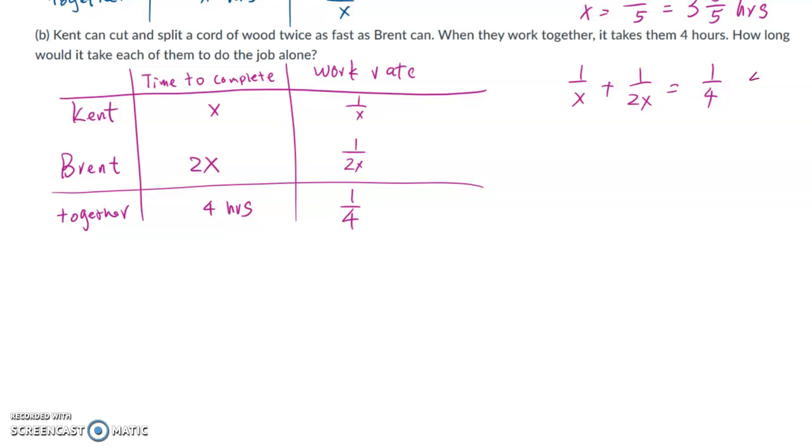So now we need to solve this equation. First, let's find the least common denominator, which is 4X. Now I need to turn each denominator into 4X, so multiply this X by 4, same to the top, multiply 2X by 2, same to the top, and 4 by X, same to the top. So this problem becomes 4 over 4X plus 2 over 4X equals X over 4X.